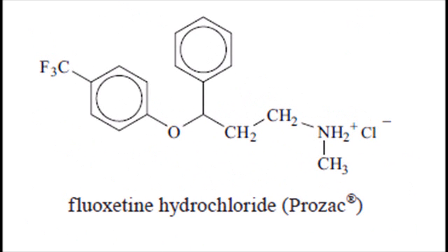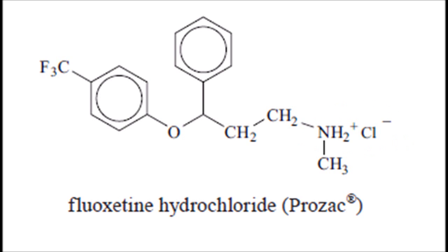Moving on to Prozac. This part of the molecule is the chloride salt, which makes it more soluble. A lot of people would like to talk about the oxygen in the middle, but that's an ether. An ether isn't in the IB, so don't be tempted to name that unless you're sure.